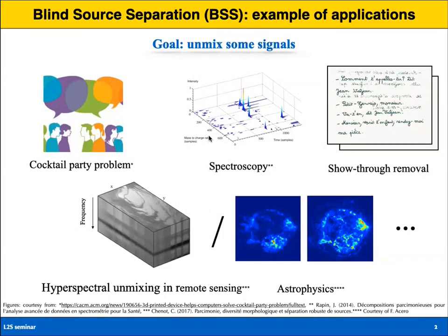What is blind source separation? The first archetypal problem is the cocktail party problem — a multi-source separation problem where guests in a room all discuss together. Their conversation is recorded by microphones placed inside the room, which capture the mixed discussion of all speakers. The goal of blind source separation is to recover the individual voice of each speaker from just the mixed signal recording.